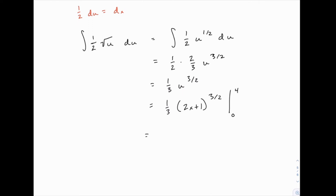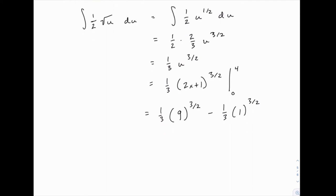So let's try it carefully. When we plug in four, we get one-third times two times four plus one is nine to the three-halves. When we plug in zero, two times zero plus one is one to the three-halves. Now conveniently, one of them is one to a power, and one to anything is just one, so we don't actually have to do any work there. That second half is just going to be one-third times one.